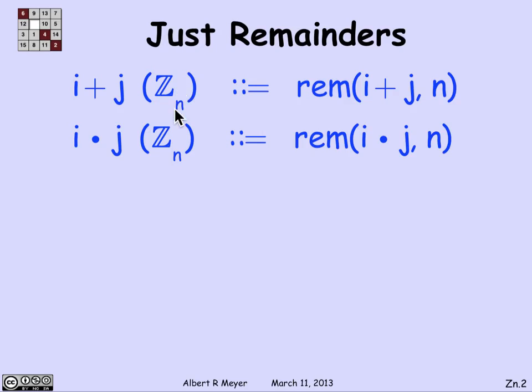And the definitions of the operations in Z_n are given right here. Addition just means take the sum, but then take the remainder immediately, just in case it's too big. And likewise, the product in Z_n is simply multiply them and take the remainder.